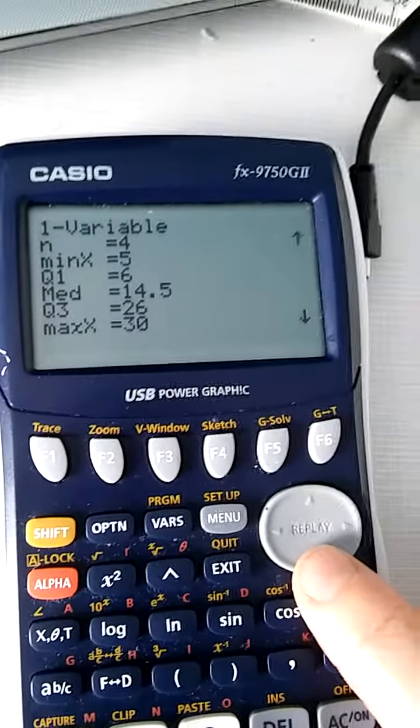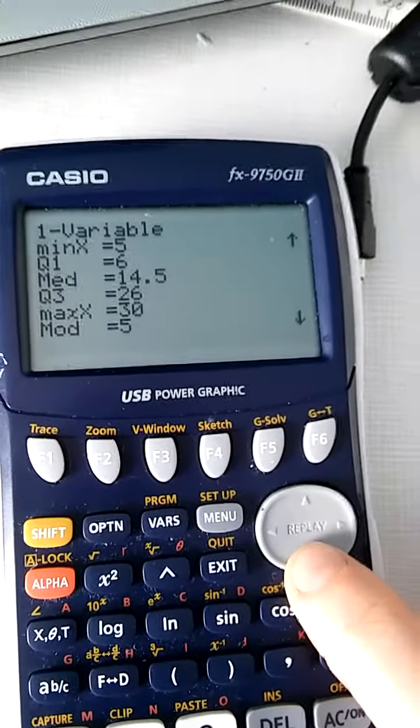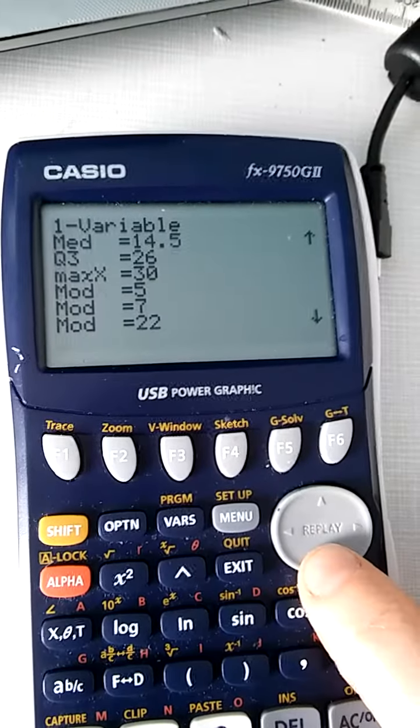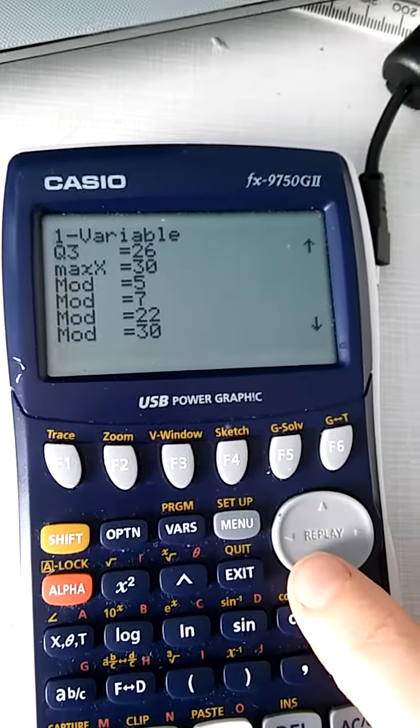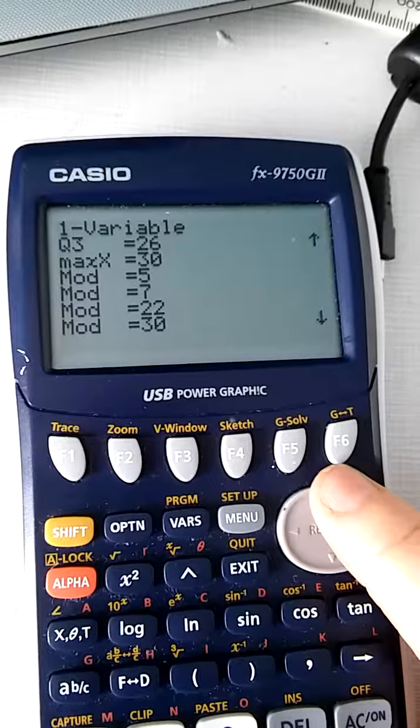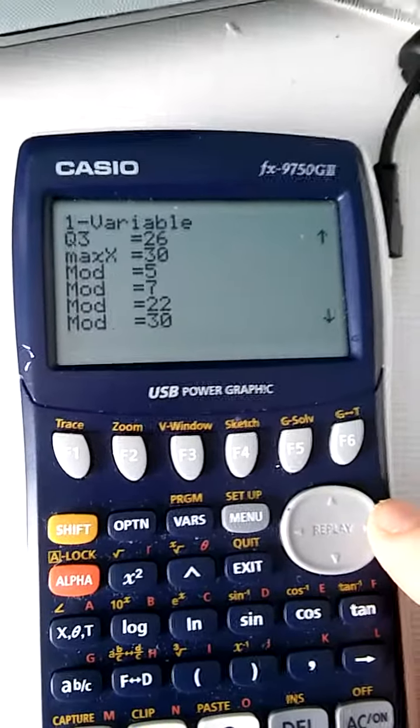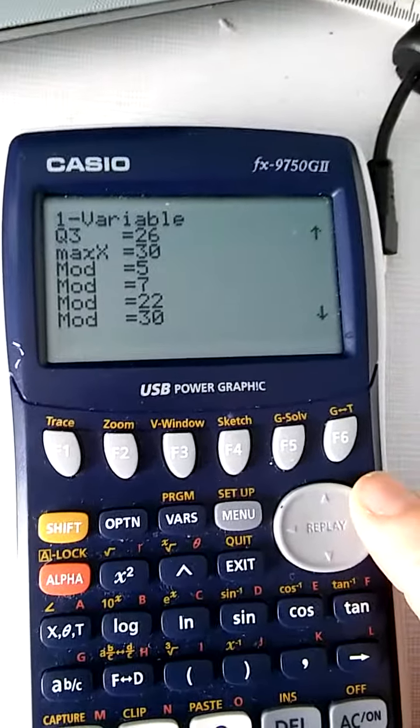The median is 14.5, and the mode, well, the mode is given as 5, 7, 22, and 30. That's because there's only one of each, so they're all as popular as each other.